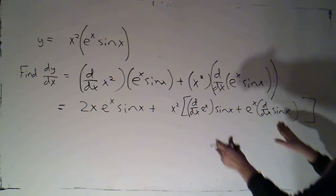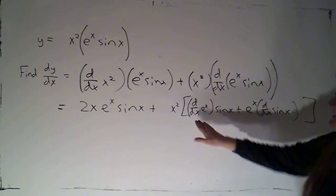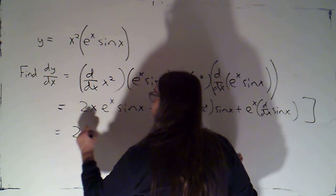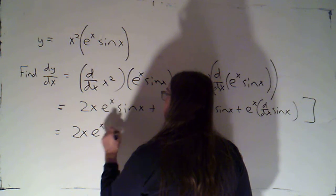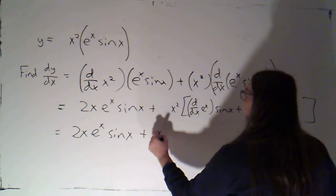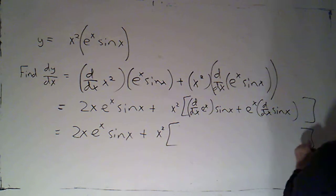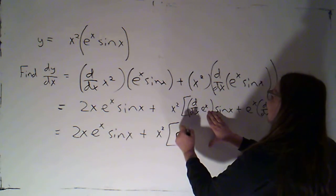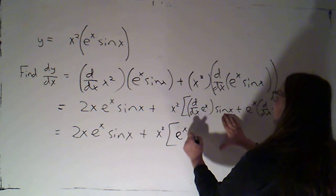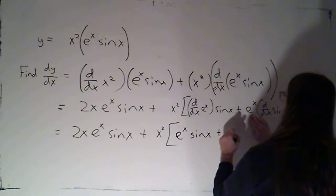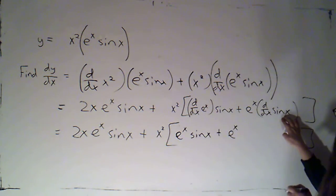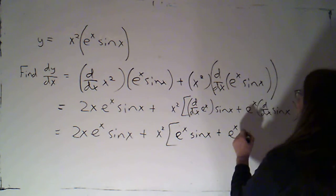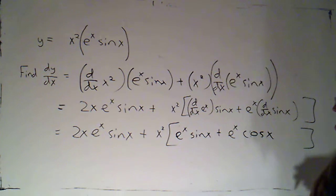And now I need to go back and evaluate because I've still got some d by dx's. This first part we're really done with. I'm just copying that: 2x e to the x sine x plus x squared brackets. The derivative of e to the x is e to the x, and that's times sine x plus e to the x gets multiplied by the derivative of sine x, which I now know is cosine of x.